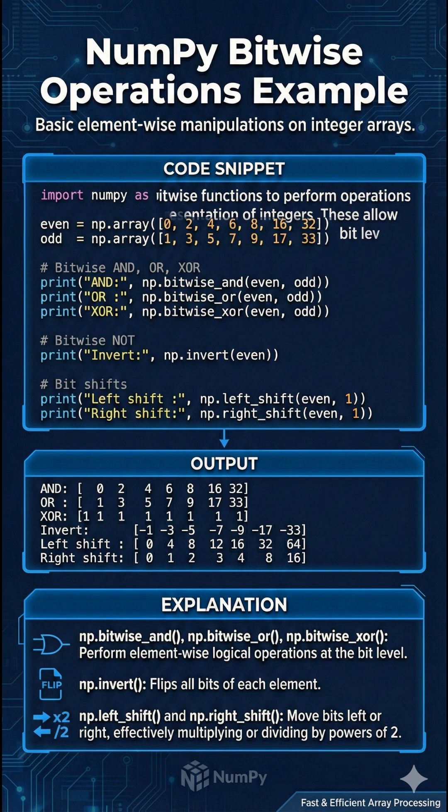The figure provides a practical demonstration of NumPy's bitwise functions using two integer arrays: even, containing values 0, 2, and 4, and odd, containing 1, 3, and 5.